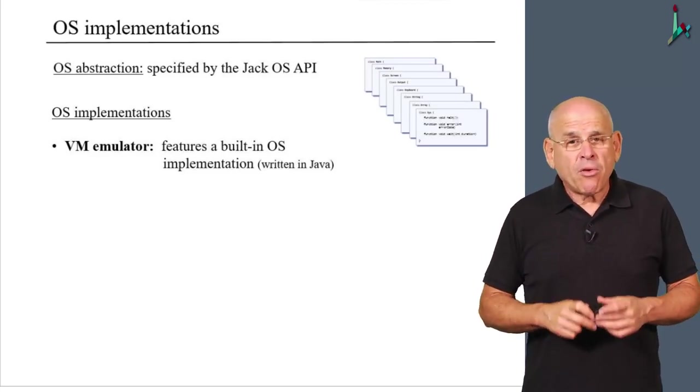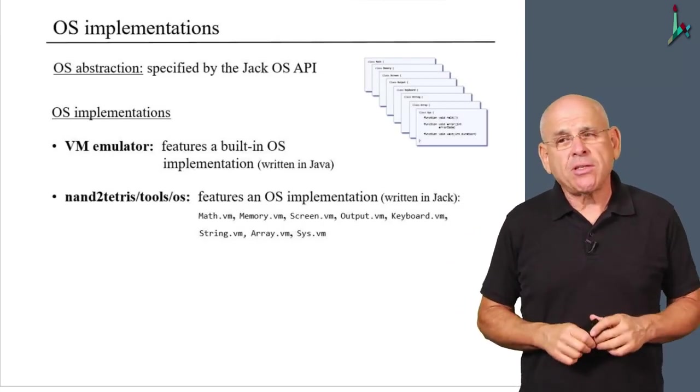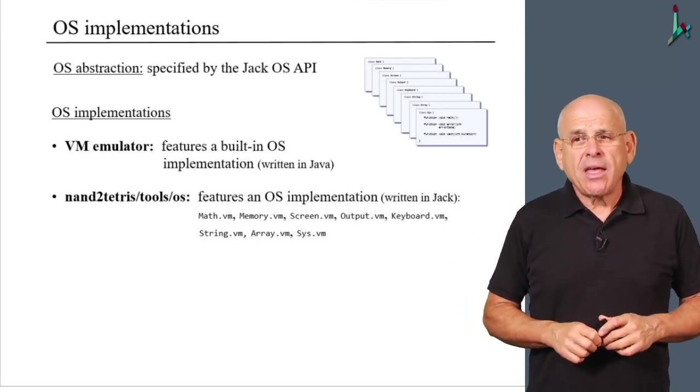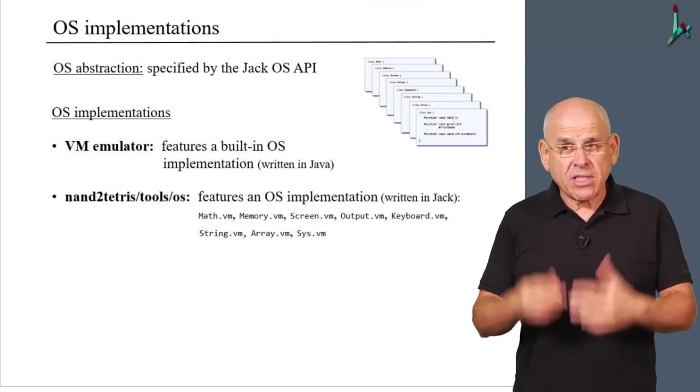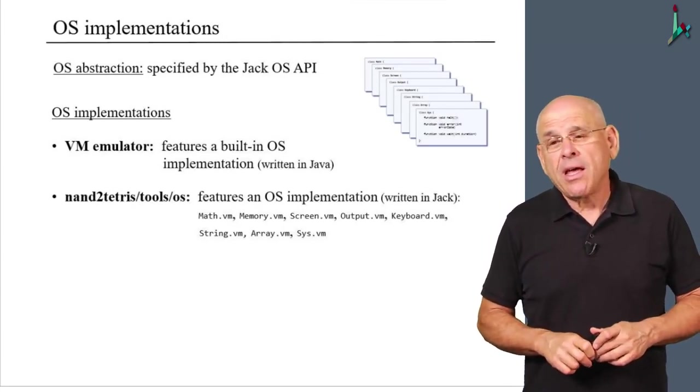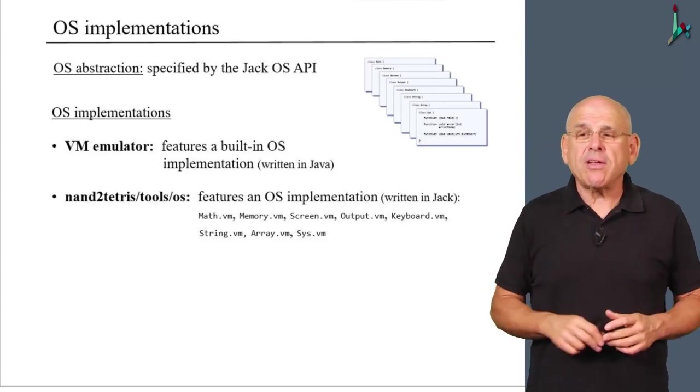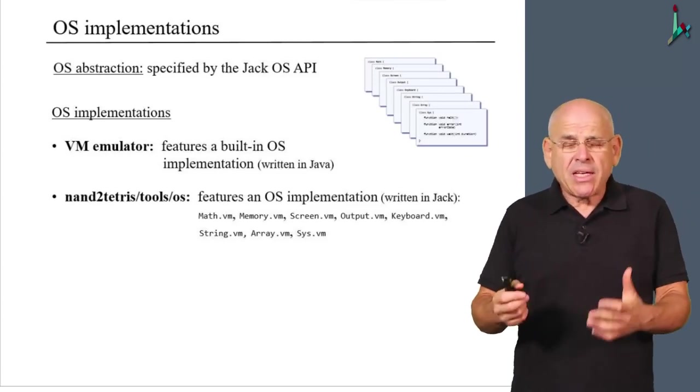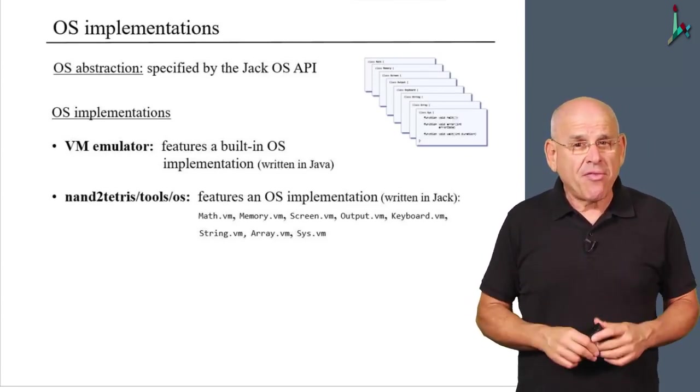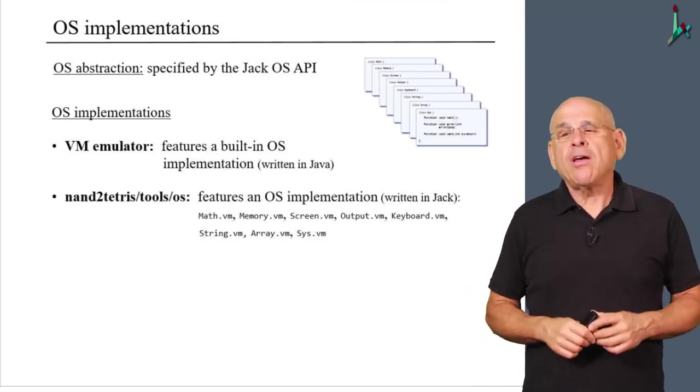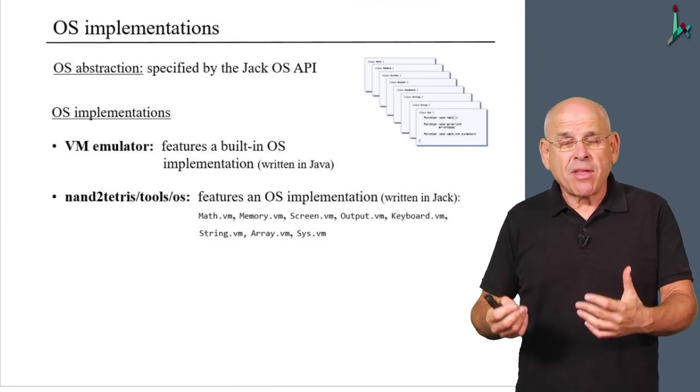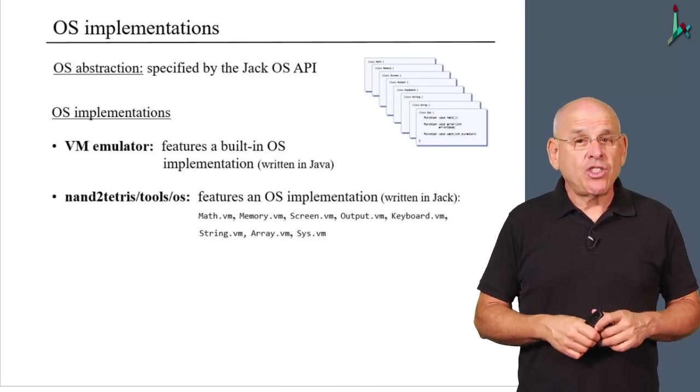Also, we provide a completely different implementation of the Jack OS in this folder here, which is now on your computer because it's part of the Nand2Tetris software suite that you have downloaded at the beginning of the course. Basically, it's a set of eight VM files, which are the compiled version of the operating system that we wrote also using the Jack language.